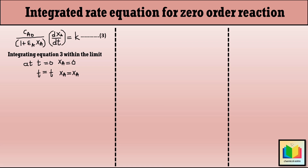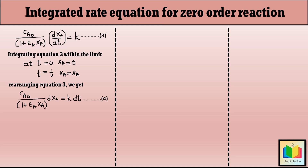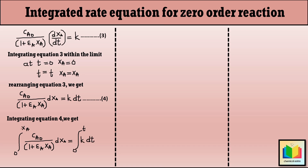Before that, let us rearrange equation 3. We have: C_A0 divided by (1 plus epsilon_A X_A) into dX_A equals K into dT (equation 4). After integrating equation 4, we get: integration from zero to X_A of C_A0 divided by (1 plus epsilon_A X_A) dX_A equals integration from zero to T of K dT.